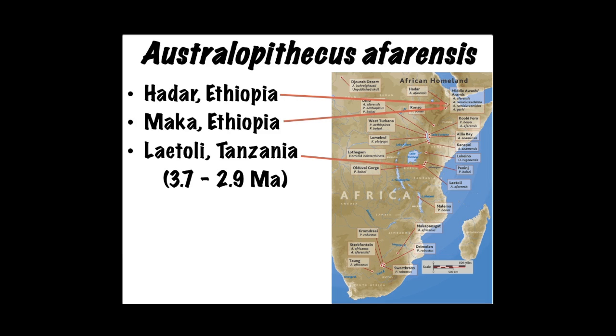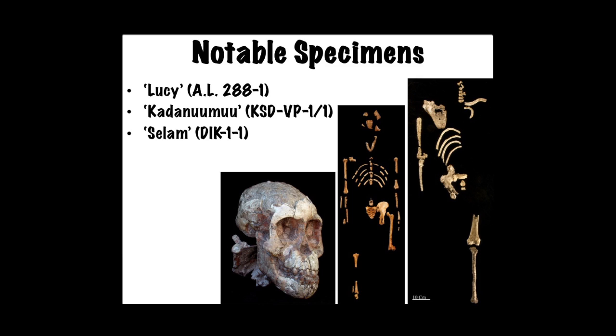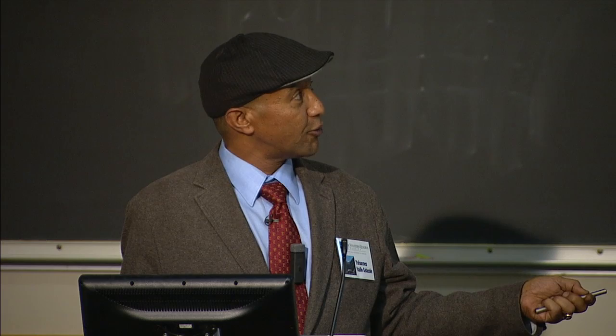The next species is Australopithecus afarensis, one of the most well-understood species in our evolutionary history because we have hundreds of fossil remains from Ethiopia and Tanzania. Laetoli, where the holotype of the species is, is dated between 3.7 and 2.9 million years, and the Hadar forms are somewhere between 3.4 and 2.9 million years. We have many notable specimens including Lucy herself and recently another partial skeleton nicknamed Kadanuumuu. We also have a child partial skeleton from Dikika, so we can understand growth and development, sexual dimorphism, and variation in this species.